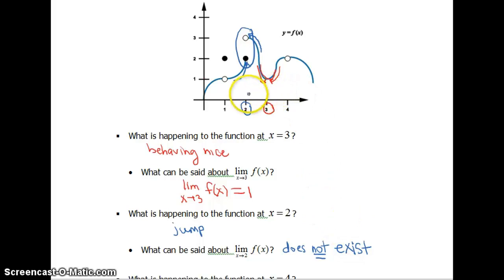So even though the function exists at 2, and that's our closed circle here. If you remember from your algebra days, a closed circle means a function is included at that point, open circle means it is not, okay? So for this particular point, the function at 2 is 2, but the limit does not exist.